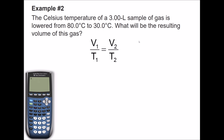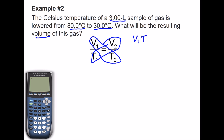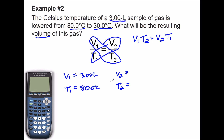Example number two: the Celsius temperature of a 3-liter sample of gas is lowered from 80 degrees Celsius to 30 degrees Celsius. What is the resulting volume? Again, we cross multiply the variables to get rid of fractions: V1 times T2 equals V2 times T1. Listing variables: V1 equals 3.0 liters, T1 equals 80 degrees Celsius, V2 is unknown, and T2 equals 30 degrees Celsius.